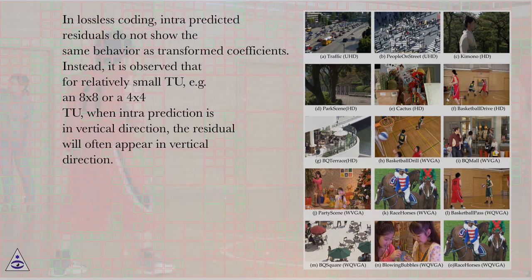In lossless coding, intra-predicted residuals do not show the same behavior as transformed coefficients. Instead, it is observed that for relatively small TUs, for example an 8x8 or a 4x4 TU, when intra-prediction is in vertical direction, the residual will often appear in vertical direction.